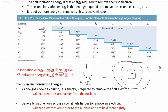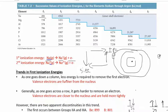The trend in ionization energy is the opposite of size — size increases down and to the left, so ionization energy increases in the opposite direction: up and to the right. High ionization energy is in the upper right corner of the periodic table. As you go down a group, less energy is required to remove an electron — low ionization energy corresponds to large atomic size.